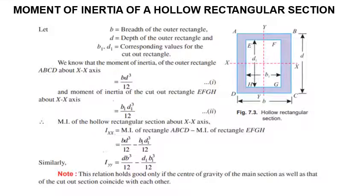Now we will see the moment of inertia of a hollow rectangular section. The outer rectangle has width B and depth D, and the inner rectangle has width B1 and depth D1. We need the moment of inertia about XX and YY axes. Since we know IXX for a rectangle is BD cubed by 12, for the hollow section we subtract the inner from the outer: IXX equals BD cubed by 12 minus B1 D1 cubed by 12.